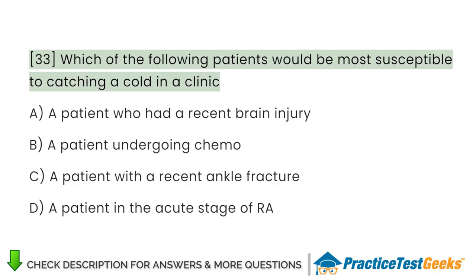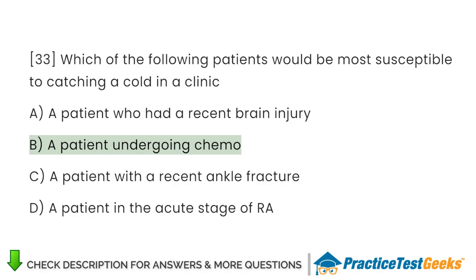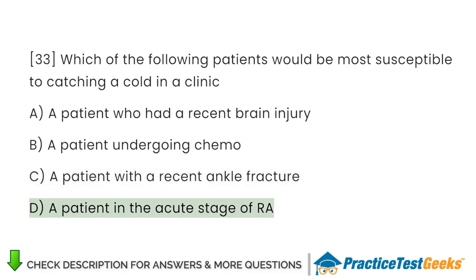Which of the following patients would be most susceptible to catching a cold in a clinic? A. A patient who had a recent brain injury. B. A patient undergoing chemotherapy. C. A patient with a recent ankle fracture. D. A patient in the acute stage of RA.